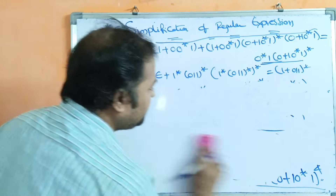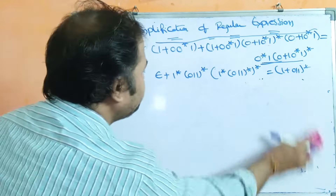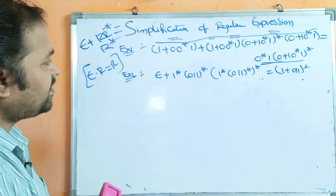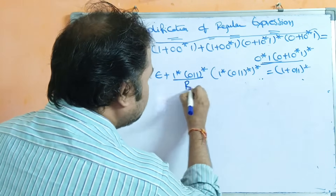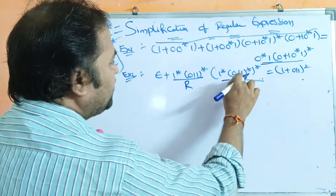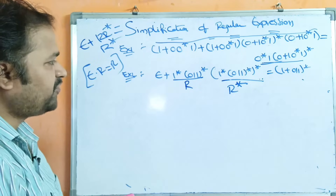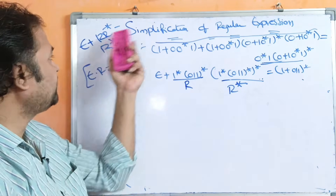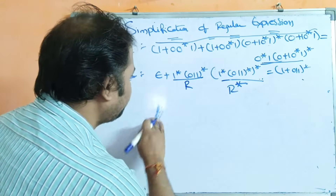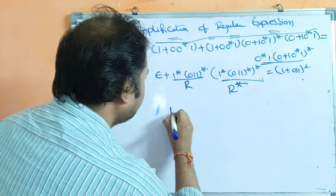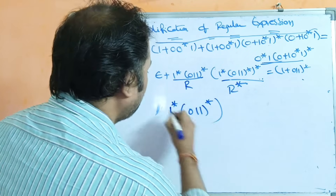Now let us simplify the second regular expression. We have: ε + (1*0·1·1*)·(1*0·1·1*)* . Letting R = 1*0·1·1*, this becomes ε + R·R*, which is in the form ε + R·R*. The formula is ε + RR* = R*, so this simplifies to R*, giving us (1*0·1·1*)*.